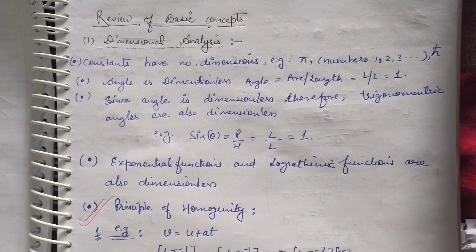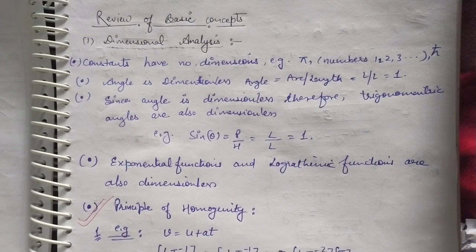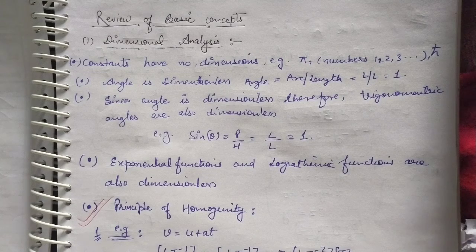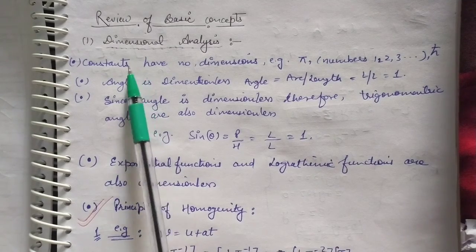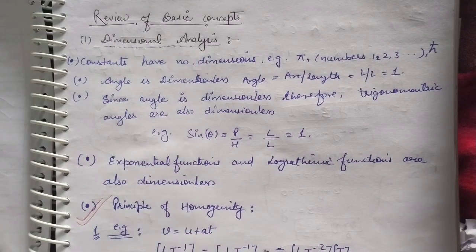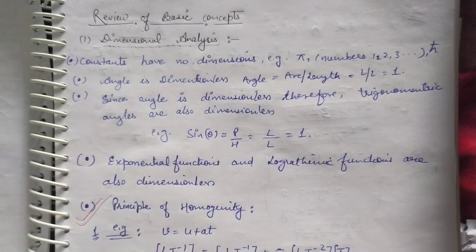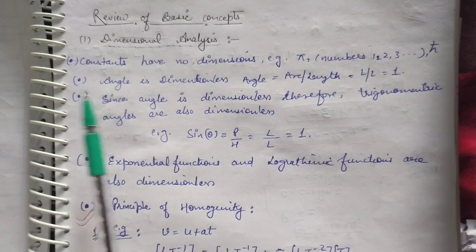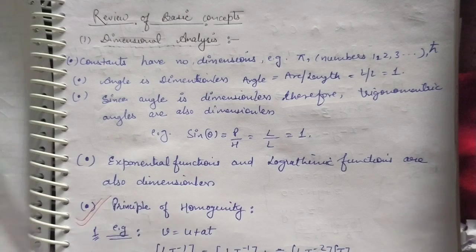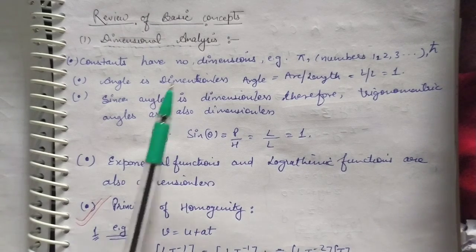Hello guys, welcome back to my channel Himani Physics Tutorials. We are going to watch Newtonian Mechanics collection number one, where we are going to study the basic concepts introduced in our physics world. That is a review of basic concepts. The first topic is dimensional analysis. I hope you have a little bit of understanding of these topics, or maybe you have forgotten, so let's give it a quick revision and do some questions related to it.